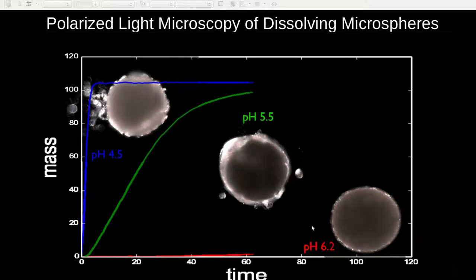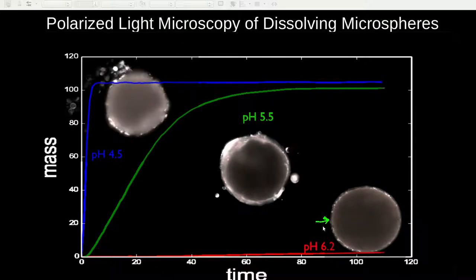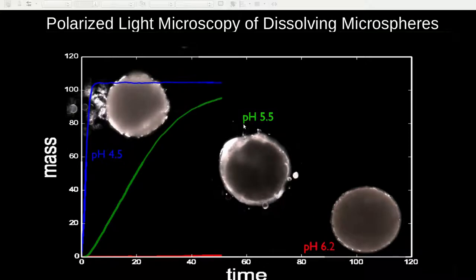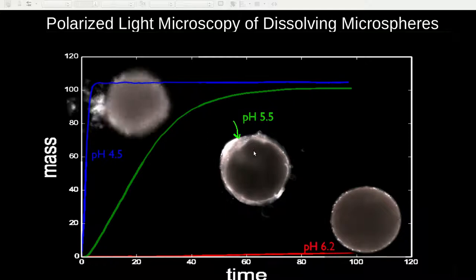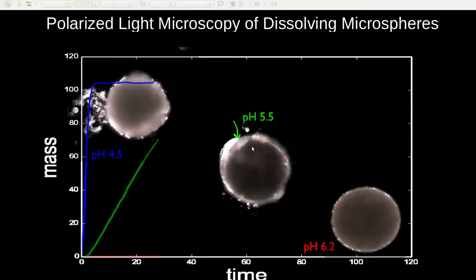At the higher pH of 6.2, the polymer stays relatively intact and therefore prevents the API from dissolving. As the pH is decreased, such as 5.5, we can see that the polymer then starts to swell and eventually creates pockets at which the API is released.